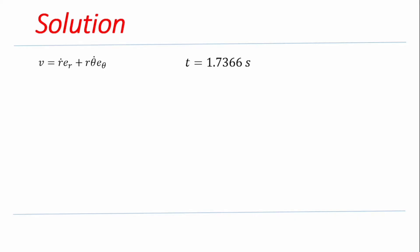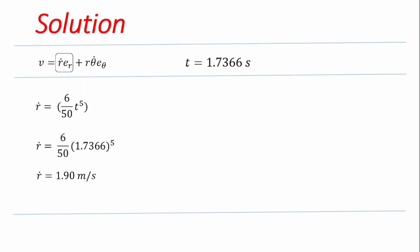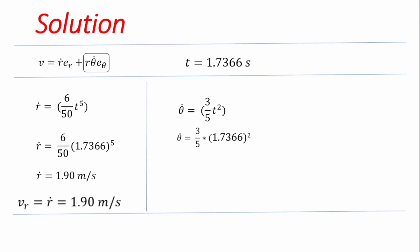To calculate velocity when t = 1.7366 seconds, we first find the radial component. ṙ = (6/50)t⁵; substituting the time value gives ṙ = 1.90 m/s. Therefore Vr = ṙ = 1.90 m/s. For the transverse component, we need θ̇ = (3/5)t²; substituting the time value gives θ̇ = 1.81 rad/s.